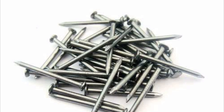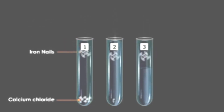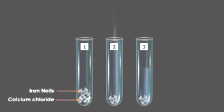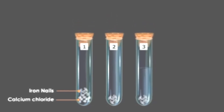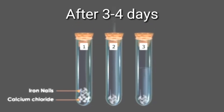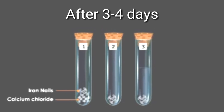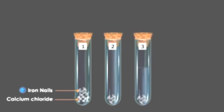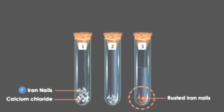Three to four iron nails are dropped into each test tube and the mouth of each test tube is closed. After three to four days, the nails are taken out and examined carefully. In the first and second test tubes there is no change — that is, there is no rust. But in the third test tube, the nails have rusted.